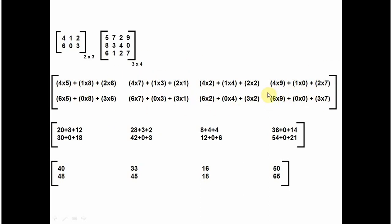How does matrix multiplication work? This location is first row, first column. You always take the row of the first matrix and the column of the second matrix, and multiply the respective elements and add them. For example, for the first row, first column location: 4 will be multiplied by 5, plus 1 will be multiplied by 8, plus 2 will be multiplied by 6.